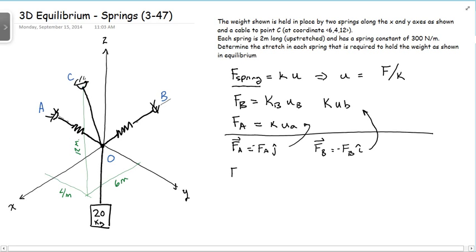I know that FC is a vector, is going from O to point C. So that's the magnitude of FC times the unit vector from O to C. In order to get that, what I need to do is I need to find the position vector OC.